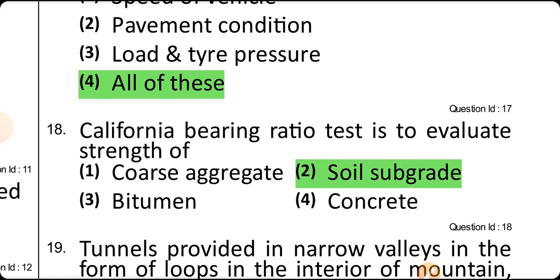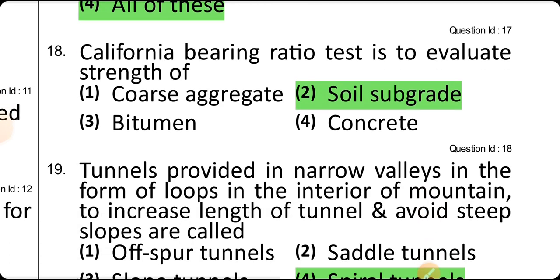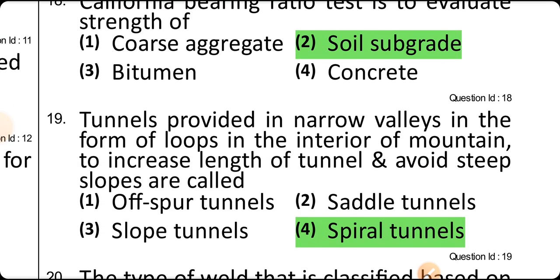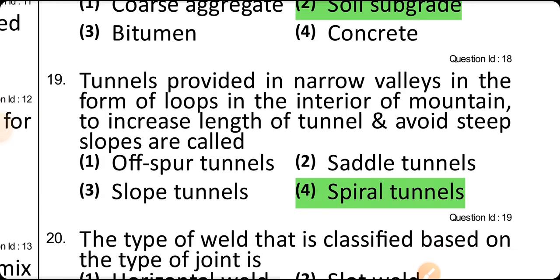California bearing ratio test is used to evaluate the strength of a subgrade for designing flexible pavement. Tunnels provided in a narrow valley in the form of loops in the interior of a mountain to increase the length of a tunnel and avoid steep slope are called spiral tunnels.